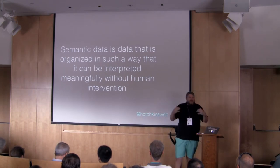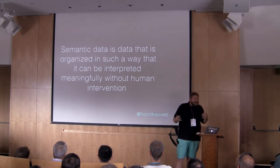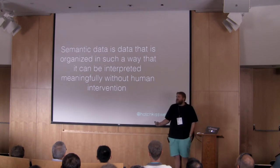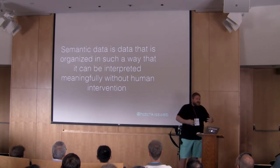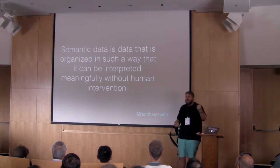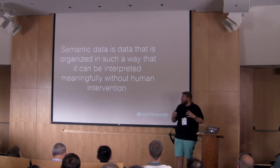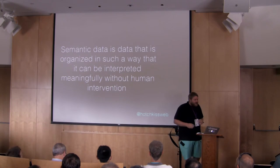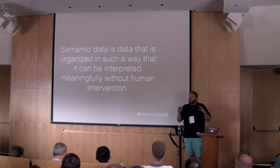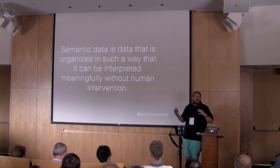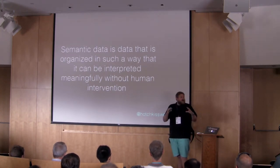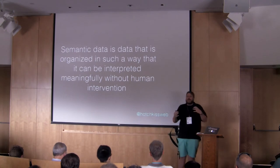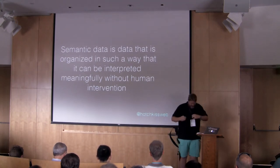Another important concept to understand is semantic data - data that's organized in such a way that it can be interpreted meaningfully without human intervention. A machine can go through, pull out pieces of information, understand what those pieces mean, understand connections between different pieces of data, and put that together in a bigger way. We're going to talk about two aspects of the API and the implications of both: one is the publicly available API - data you're giving away to everybody - and one is the private API where you're using that data in known transactions.